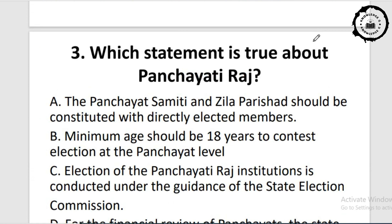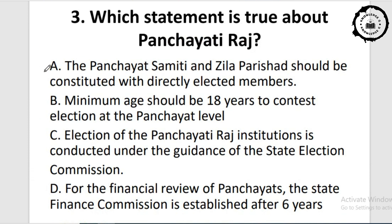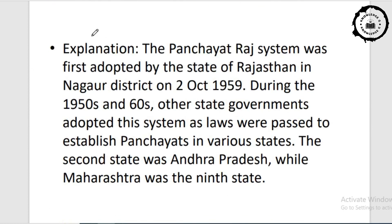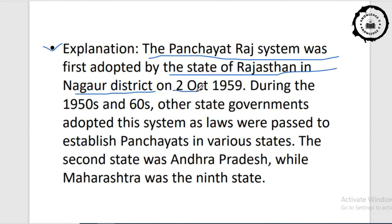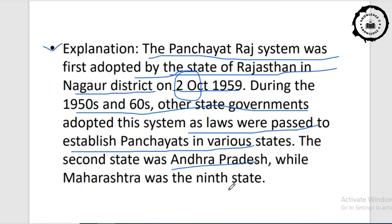Question three: which statement is true about Panchayatiraj? The correct answer is option A. The Panchayat system was first adopted by the state of Rajasthan in Nagaur district on October 2, 1959. During the 1950s and 1960s, other state governments adopted the system as laws were passed to establish Panchayatiraj in various states. The second state was Andhra Pradesh, while Maharashtra was the ninth state.